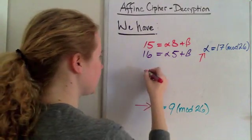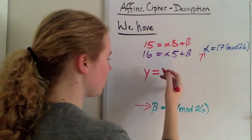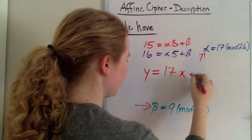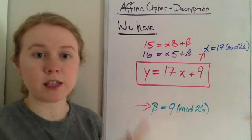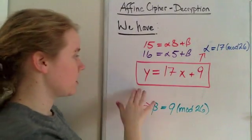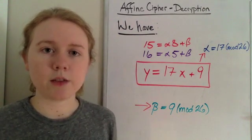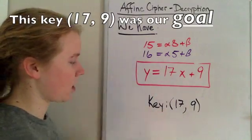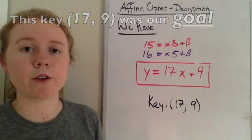So we can take this and plug them in, and we say we had y equals alpha times x plus beta. And this right here is the key. Now we can use this to solve for the rest of the ciphertext. Technically, if you want to write out the key, we write that the key is 17 comma 9, and that's just alpha comma beta. That's just the formal way we write out a key for the affine cipher.